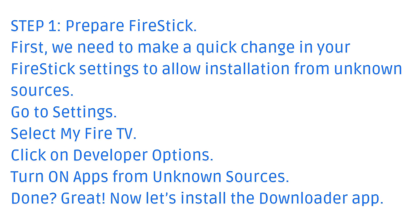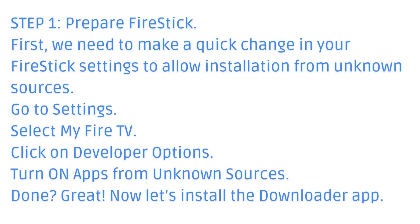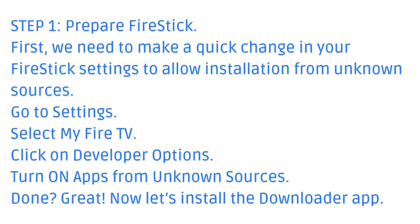Step 1: Prepare Fire Stick. First, we need to make a quick change in your Fire Stick settings to allow installation from unknown sources. Go to Settings, select My Fire TV, click on Developer Options, and turn on Apps from Unknown Sources. Done? Great. Now let's install the Downloader app.